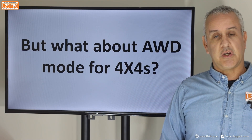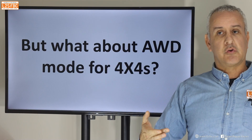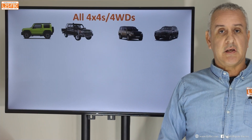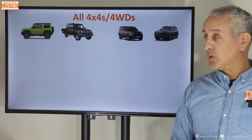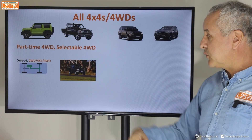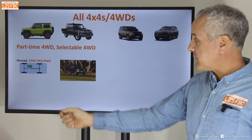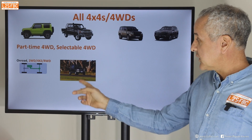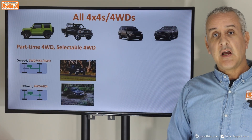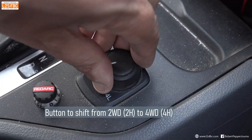What about AWD mode for 4x4s — isn't that a contradiction? All four of these vehicles are 4x4s in the commonly accepted definition, meaning they're designed for rough terrain use. But two of them are different from the others because they are what we term part-time or selectable 4WD. On road, on high-traction surfaces, they actually run in two-wheel drive mode, typically driving only the rear wheels. When off-road, they engage the front wheels and become a 4x4.